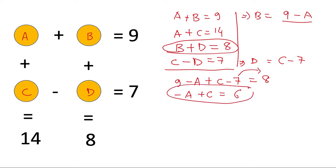Now let's take a look at these two equations: a plus c is 14, and minus a plus c is 6. So add these two, add equation 1 and 2 here. So a will get cancelled and we will get 2c is equal to 20, and c becomes 10.